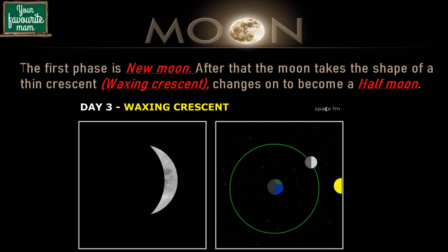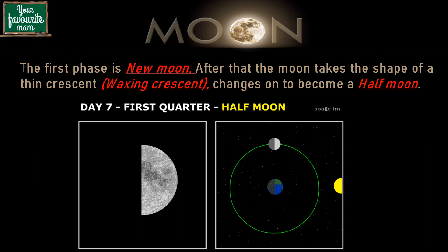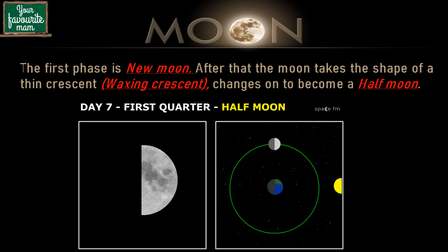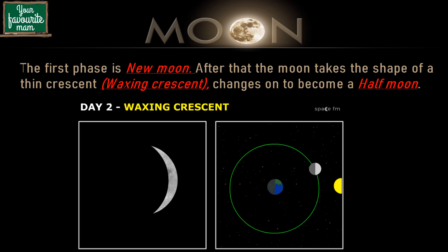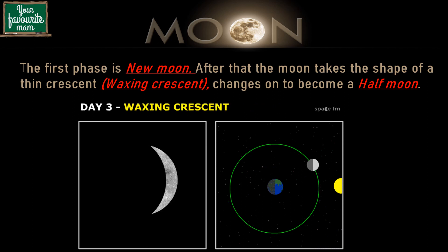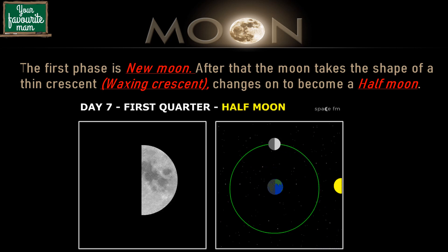There are eight phases of the moon. The first is the new moon, when we cannot see the moon at all. After that, the moon takes the shape of a thin crescent opening to the left — this phase is called waxing crescent. Waxing means it is getting bigger. Then the moon changes to become a semicircle, also known as the first quarter or a half moon.